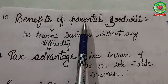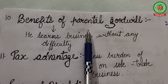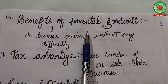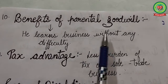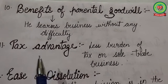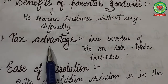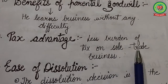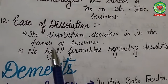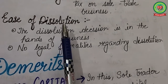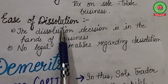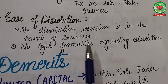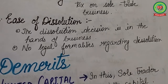Next is benefits of parental goodwill — if a trader has a business inheritance, he is able to benefit from the goodwill of his parents and learns business without any difficulty. Next is tax advantage — from an income tax point of view, sole tradership is the best because there is a lesser burden of tax. Next is ease of dissolution — it is very easy to dissolve a sole tradership business, as the dissolution decision is in the hands of the owner and there are no legal formalities involved.